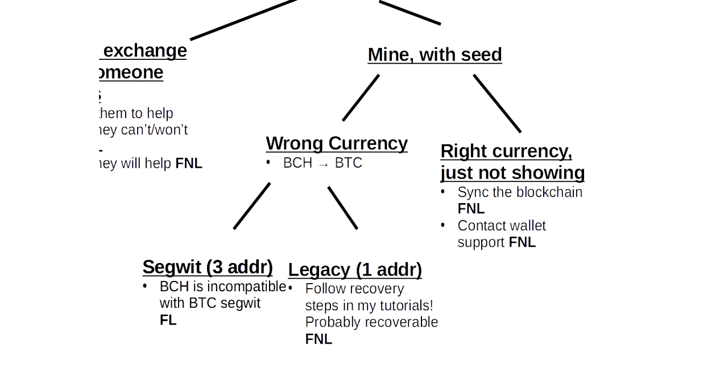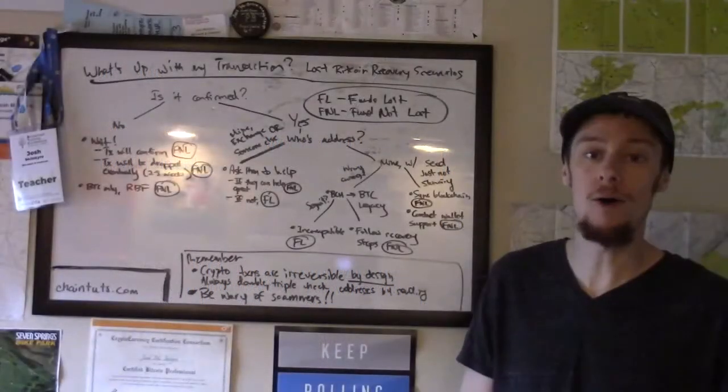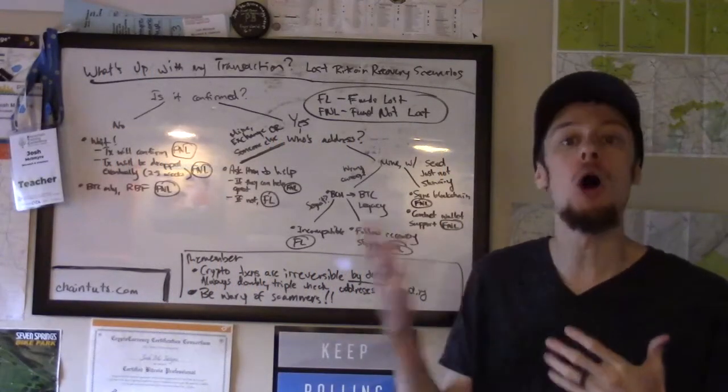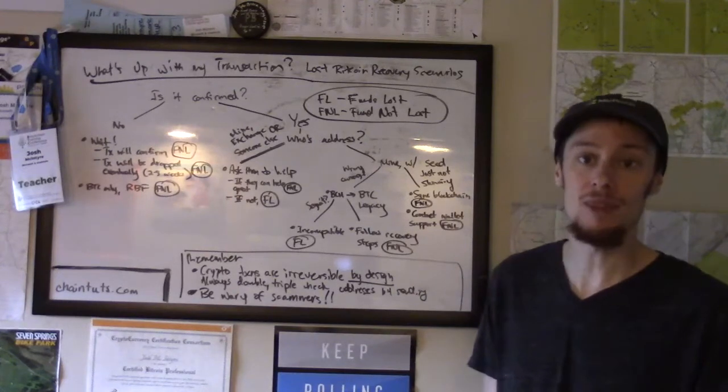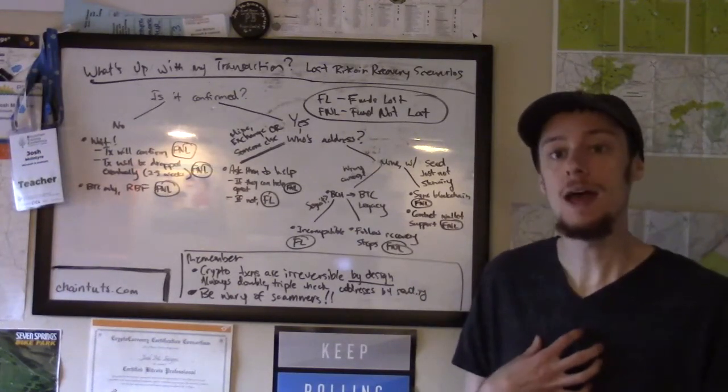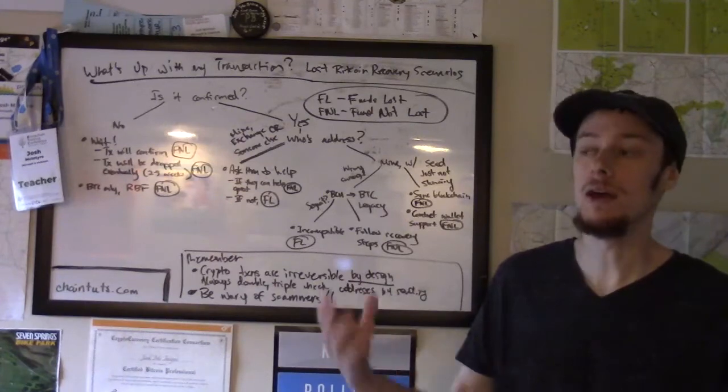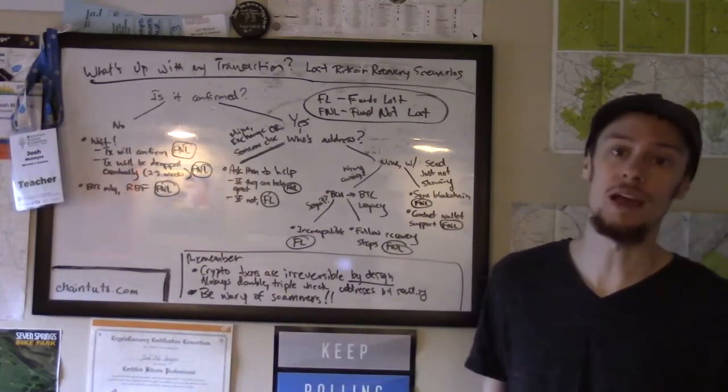So every wallet gets its information about what the balance of that wallet is by looking at the public blockchain, which is a distributed, decentralized ledger of all the transactions on that crypto network. Sometimes your wallet is simply out of sync. Maybe it's disconnected from the internet, or it hasn't synced the blockchain in a while, and so the wallet just doesn't know about the new money that's come in yet. The money is still yours, you still own it, it just hasn't actually been displayed as yours in the wallet.